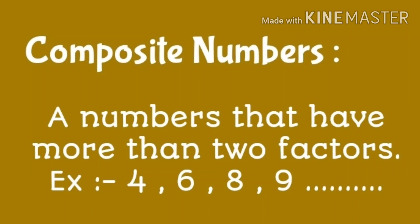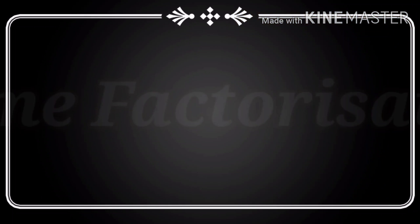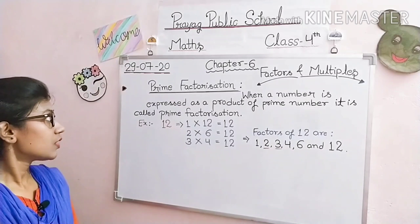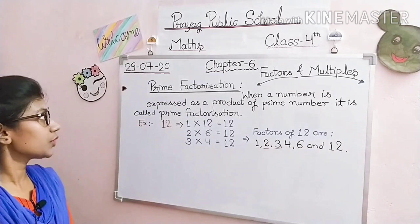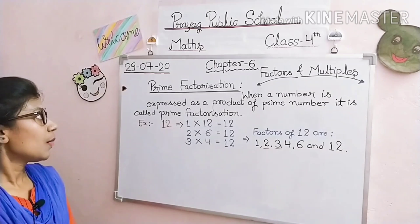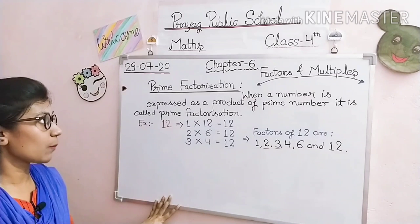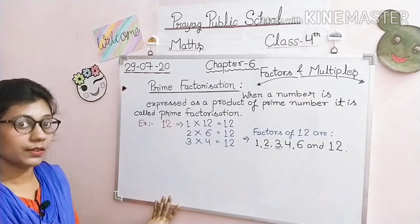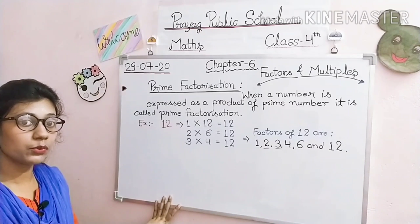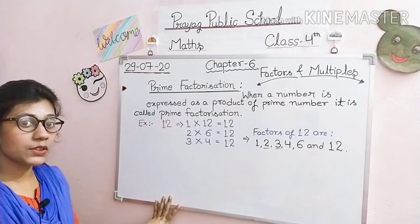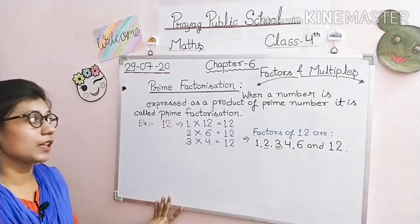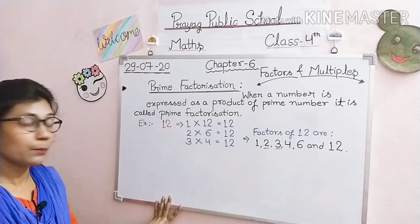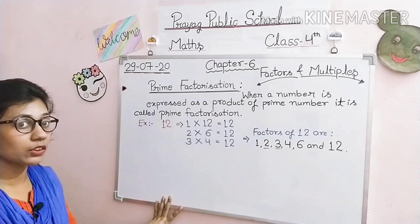हमने ये सारे topics पढ़े थे। Prime factorization को पढ़ने से पहले हमें दो topics समझने जरूरी हैं — first is prime numbers and second is factors. Prime numbers जैसा कि हमने पढ़ा, उनके सिर्फ दो factors होते हैं — first one and second वो number itself. और किसी भी number का factor find out करना हमें पता है, तो हम prime factorization को कैसे find out करेंगे, वो हम सीखेंगे।